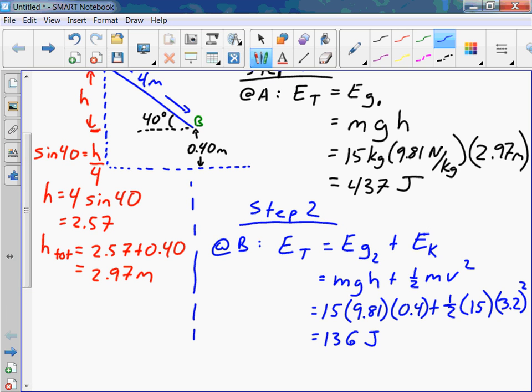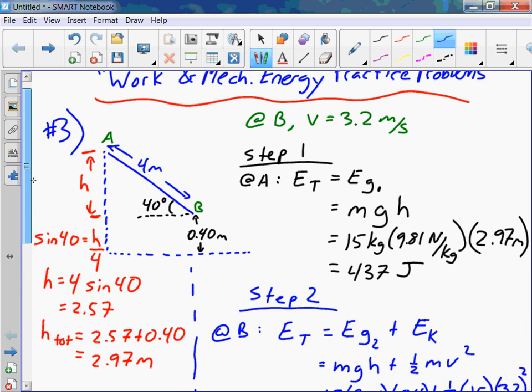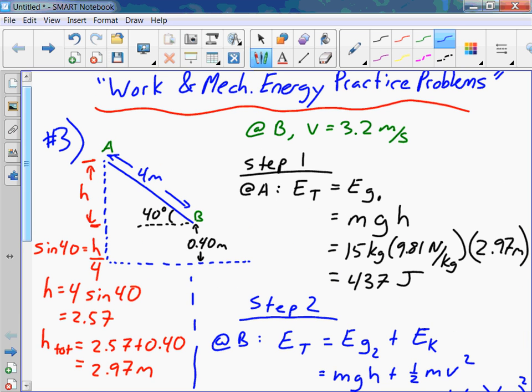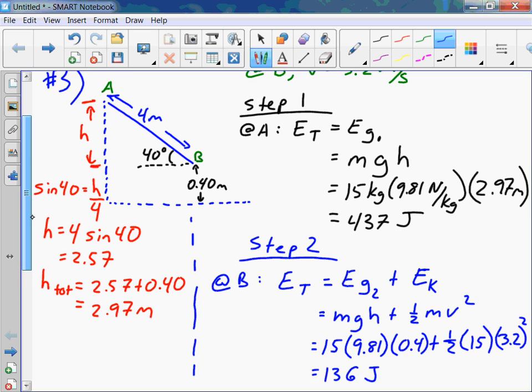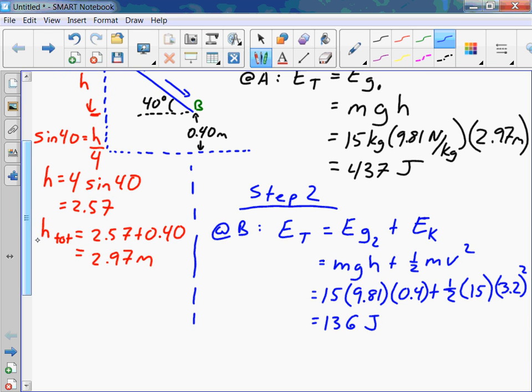Alright, so we've done all our main calculations here. The total energy at the top of the slide was 437 joules, just based on her height above ground. When she hit the bottom of the slide, she still had a little bit of gravitational potential energy based on the 0.4 meter height from the bottom of the slide. And she had some kinetic energy based on the 3.2 meters per second that was given.